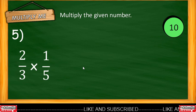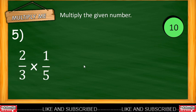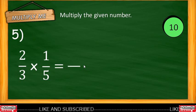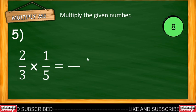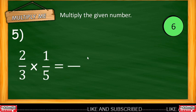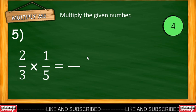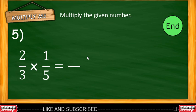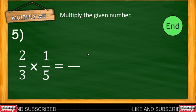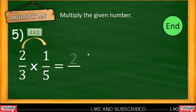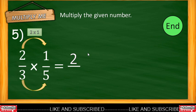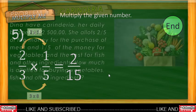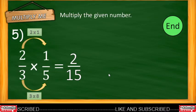Example number 5: two-thirds multiplied by one-fifth. You have 10 seconds to answer. Timer starts now. Let's reveal the answer. 2 multiplied by 1 — the answer is 2. 3 multiplied by 5 — the answer is 15. So the answer is two-fifteenths.